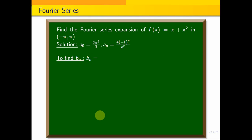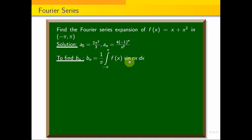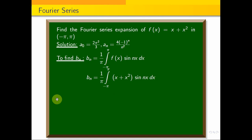So a naught and a_n are found. Now b_n is equal to 1 by pi integral minus pi to pi f of x into sin nx dx, which is 1 by pi integral minus pi to pi of x plus x square into sin nx dx.